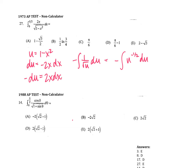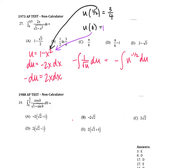I've got to change my bounds and put them in terms of u. For the upper bound, plugging in 1/2: 1/2 squared is 1/4, and 1 minus 1/4 is 3/4. For the lower bound, 1 minus 0 is 1, so my lower bound is 1 and my upper bound is 3/4. I can flip them to go from 3/4 to 1, which gets rid of my negative and makes it a positive integral.